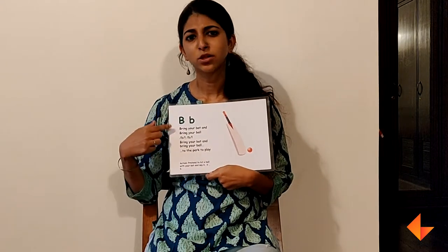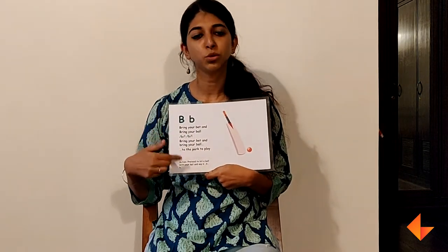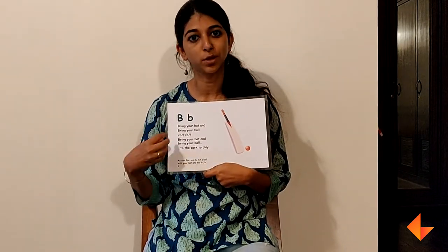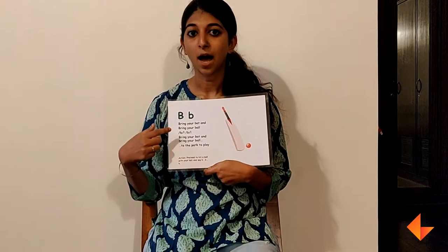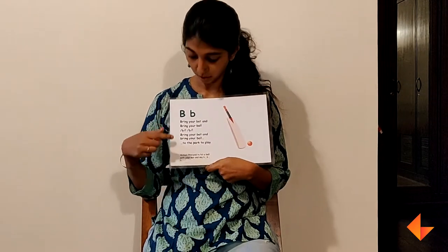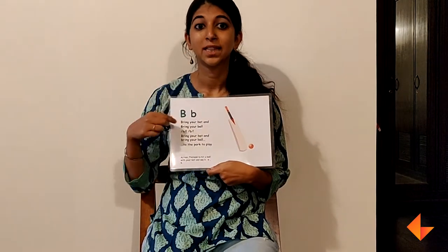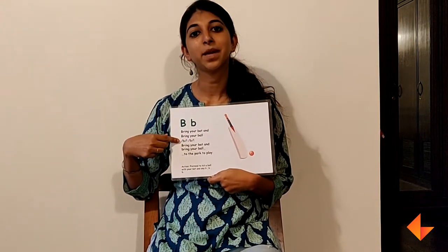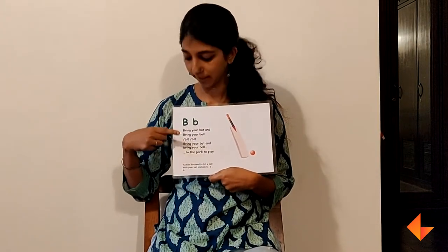Once you sing the song two to three times and get your children to repeat, ask them which sound they hear in the song. We hear the sound B. The sound B is made by the alphabet B.